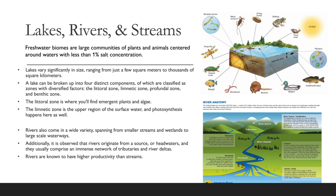Rivers also come in a wide variety, spanning from smaller streams and wetlands to large-scale waterways. Rivers originate from a source or headwaters, and they usually comprise an immense network of tributaries and river deltas. Tributaries are small streams that feed into another river and a larger waterway.